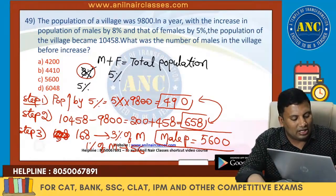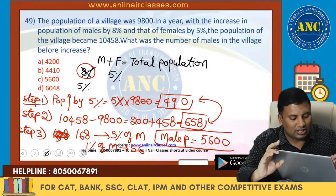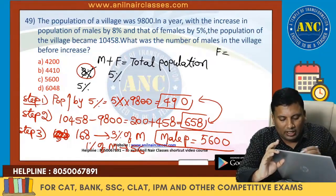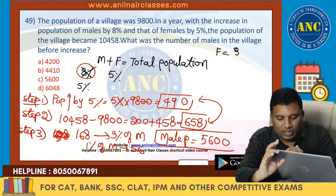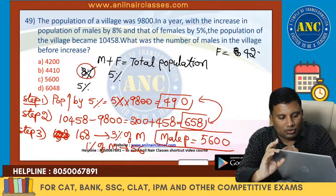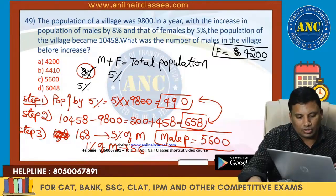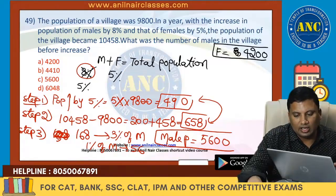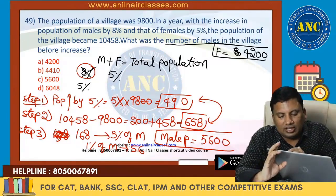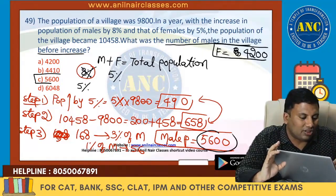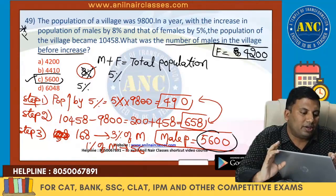And female population will be 9,800 minus 5,600, which is 4200. Female population is 4200. So what was the number of males in the village before the increase? The answer we got is 5600. Extremely important model.